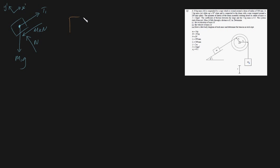Let's deal with our second mass now. This is our second mass — it has a force due to gravity downwards, which is m2g, and it has a force due to the tension in the rope, which is T2. Notice the tensions are different, because the strings are actually different — they're wrapped around different parts of the pulley and are completely different objects, so they have different tensions.